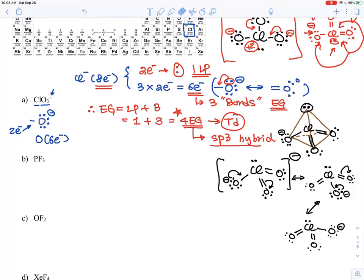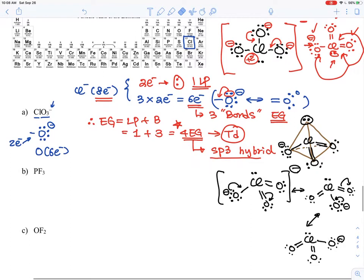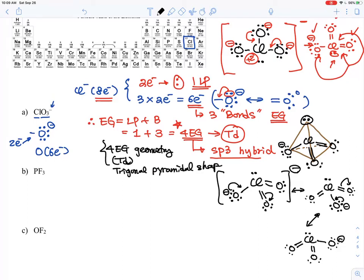What's my summary here? I've drawn the Lewis structures, but what is important is four electron group geometry. That means tetrahedral geometry, and hybrid orbital shape-wise, trigonal pyramidal shape. Hybrid orbital-wise, four means sp3, that counted as four-orbital hybridization. So sp3 hybrid orbital, that's the answer for the chlorine in the middle.